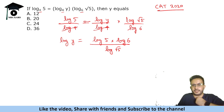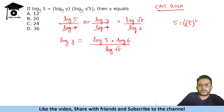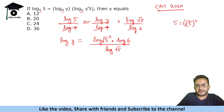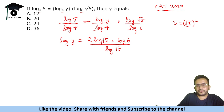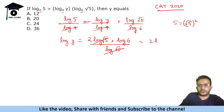Rearranging, log y equals log 5 times log 6 over log √5. Now, 5 = (√5)², so log 5 = 2·log √5. Substituting: log y = 2·log √5 times log 6 over log √5. The log √5 cancels, giving log y = 2·log 6.